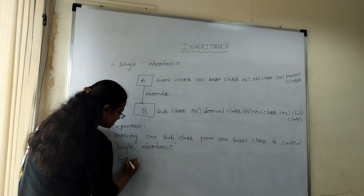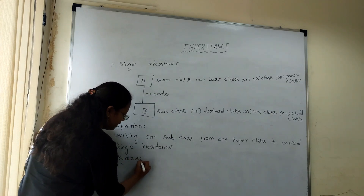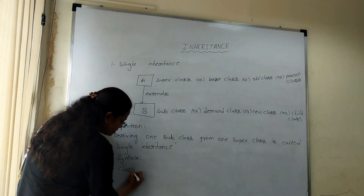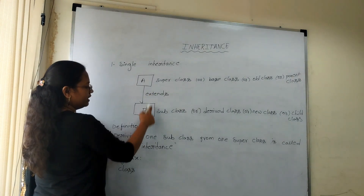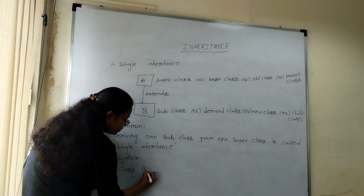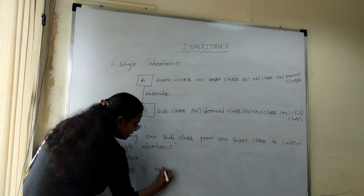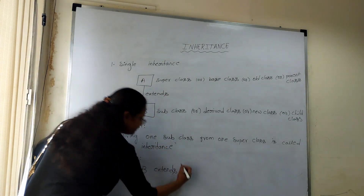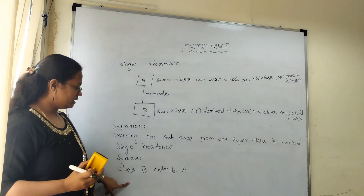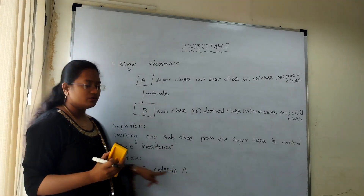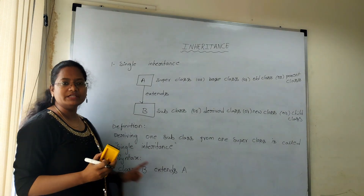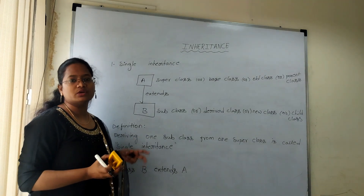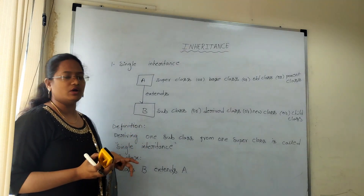Let us see the syntax and UML diagram. To extend class B from class A, you write: class B extends A. You write the sub class name first, then the extends keyword, then the super class name. In this way we implement single inheritance. Now let us see one program — how to implement single inheritance and how to call the data.